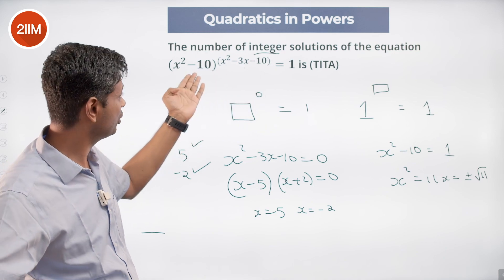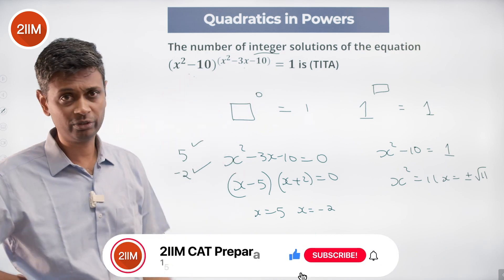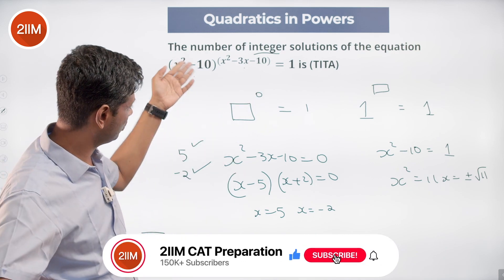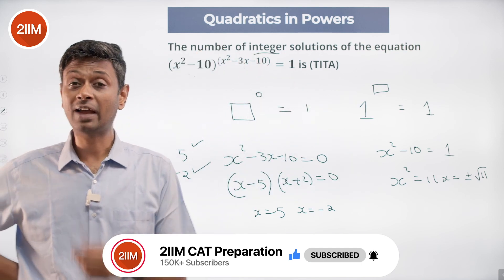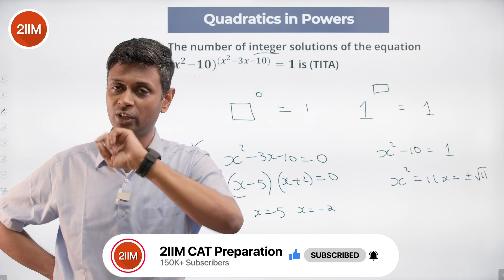Something to the power of something is 1. Either this base should be 1, or that exponent should be 0. Base equal to 1, solve. Exponent should be 0, solve. We are through. Have I completed everything? No I have not. There's one more possibility here,